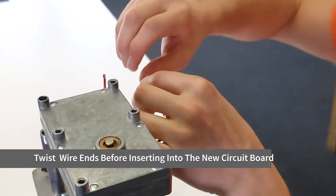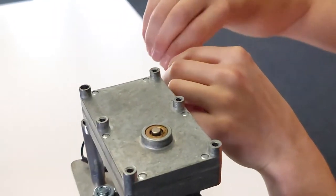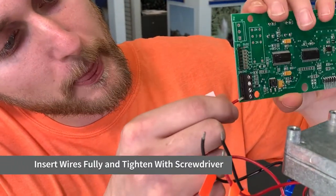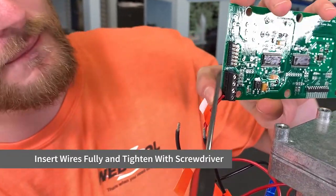Twist the ends on each wire. Reconnect each wire to their proper location on the new board and tighten with the flat head screwdriver.